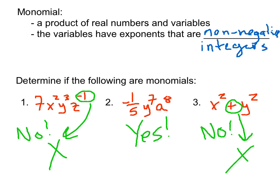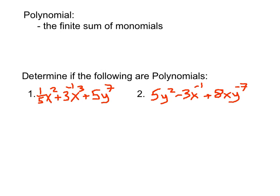Now let's use this definition of a monomial to define what a polynomial is. A polynomial is just the finite sum of monomials. Finite meaning it's not going to go on forever — it's going to have a certain number of terms. In order to determine whether we have a polynomial we just need to look at the different terms, which are separated by addition and subtraction.